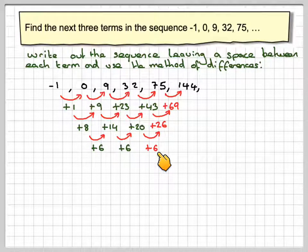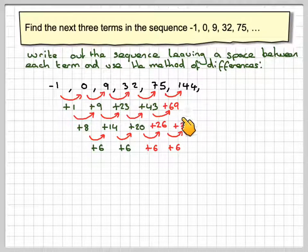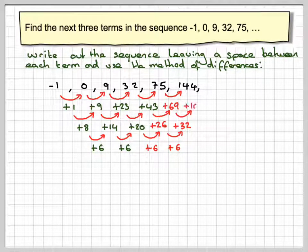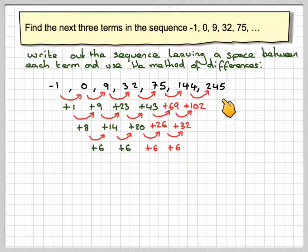And now we do the same thing again. Add a further 6 to 26, that's going to give me 32. 69 plus 32 gives me 101. 144 plus 102 will give me 245.